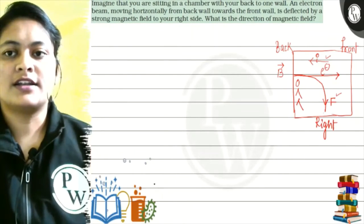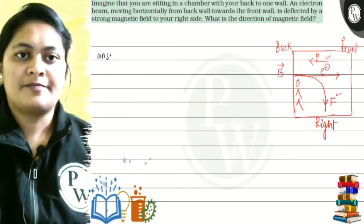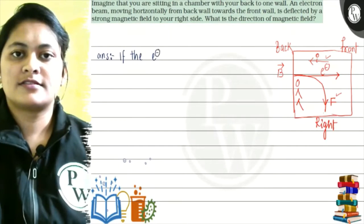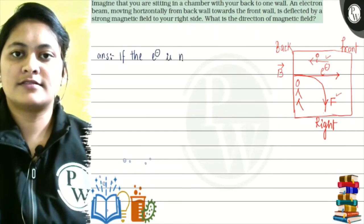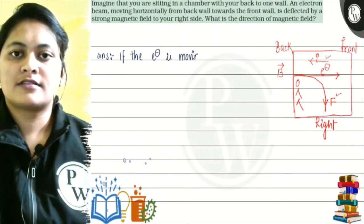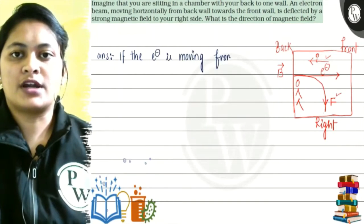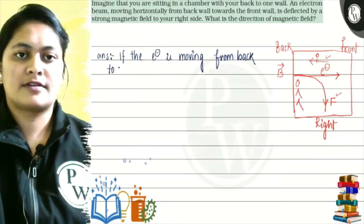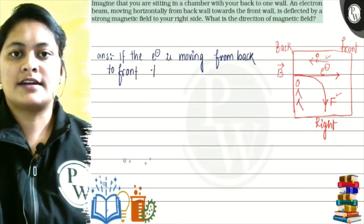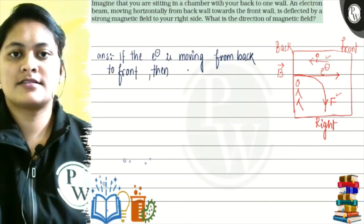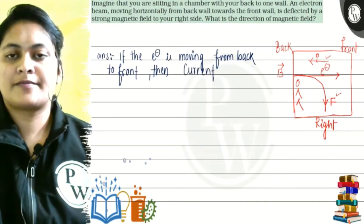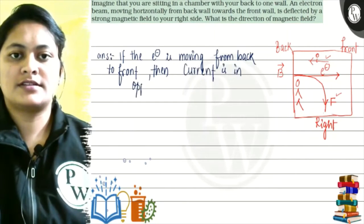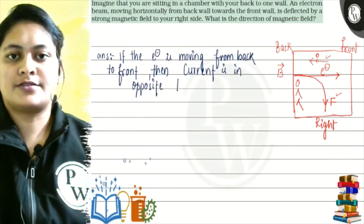So, if we are asking for the magnetic field direction - suppose, if the electron is moving from back to front, then current is in opposite to that.